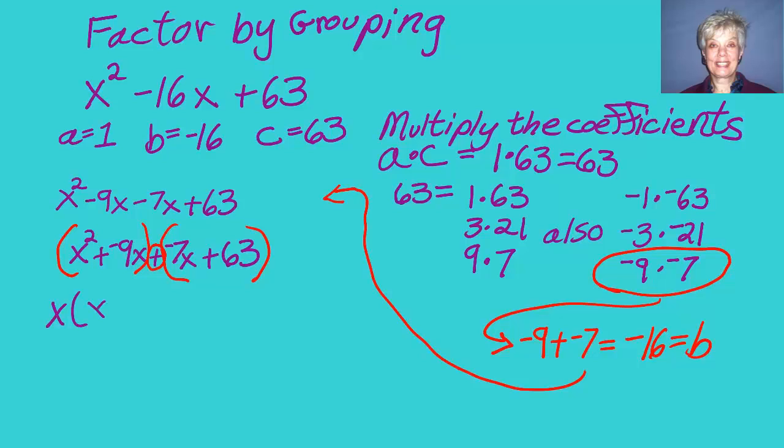Then I take the first two terms and I factor them by GCF, and I take the second two terms. Now I have to deal with a rule that says if my leading coefficient, negative 7, is negative,